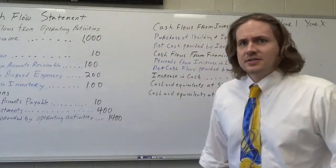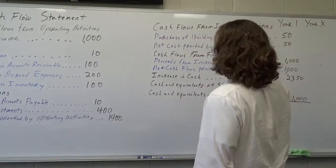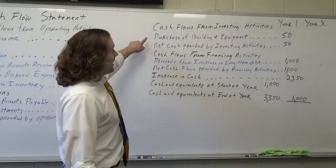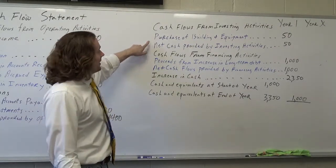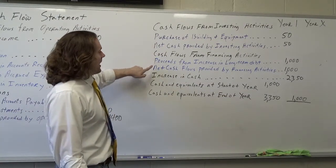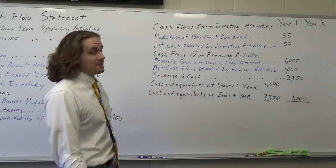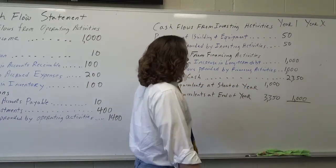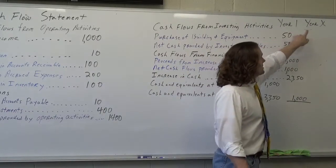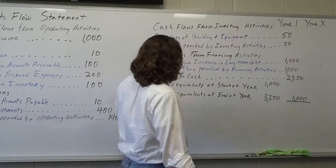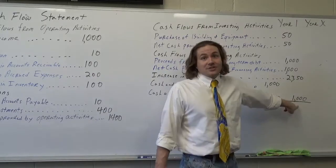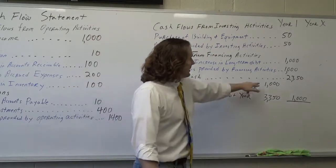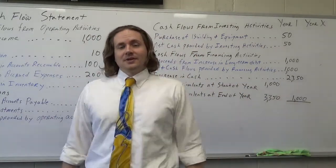I'm going to take the fourteen hundred, subtract the fifty from investing, and add the thousand from financing, and that gives me my increase in cash. Now let's say at the start of the year I had a thousand dollars in cash. I'd look at the cash and equivalents on hand at the end of the previous year — so that was a thousand. I add my new increase in cash to what I had at the beginning of the year, and I get three thousand three hundred and fifty dollars.